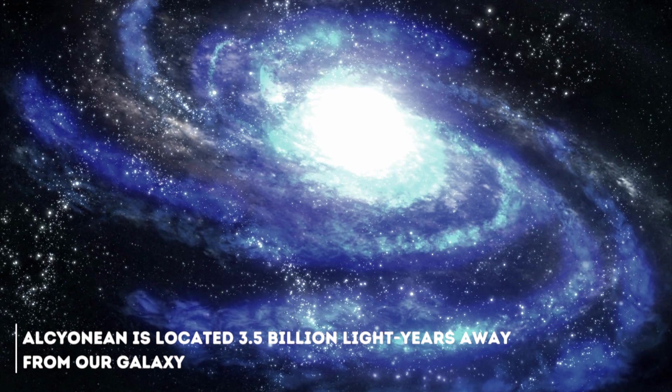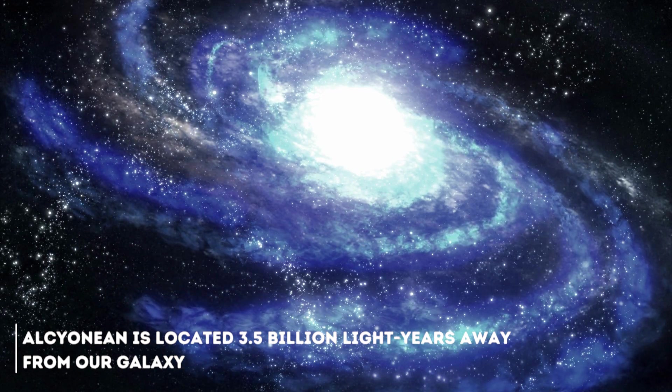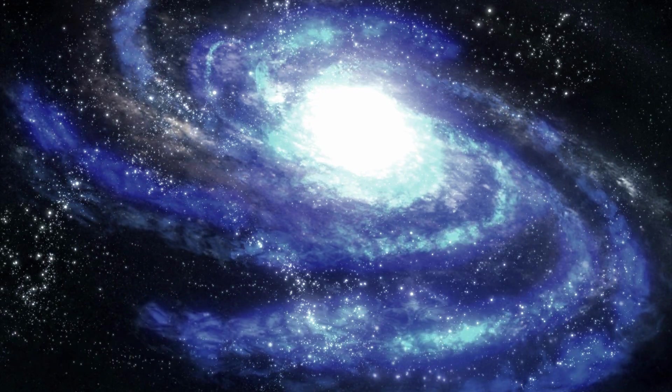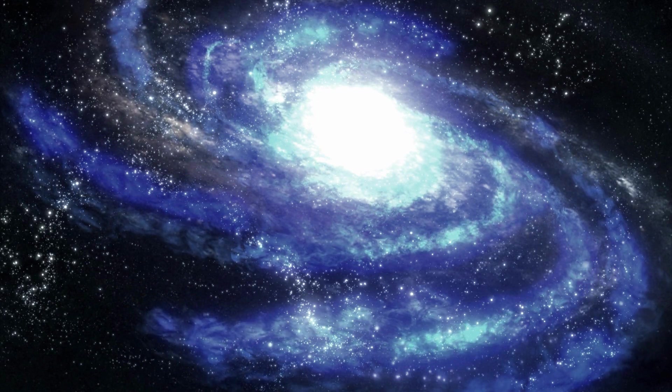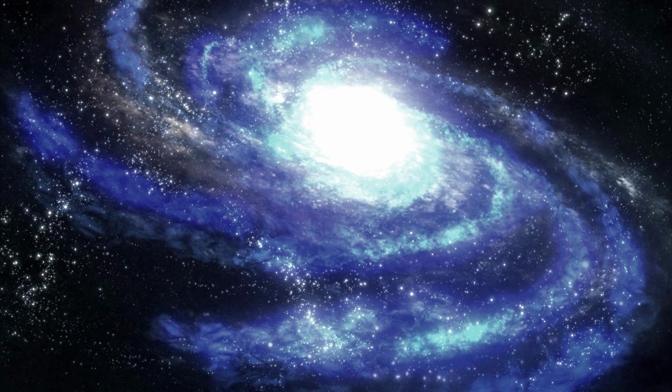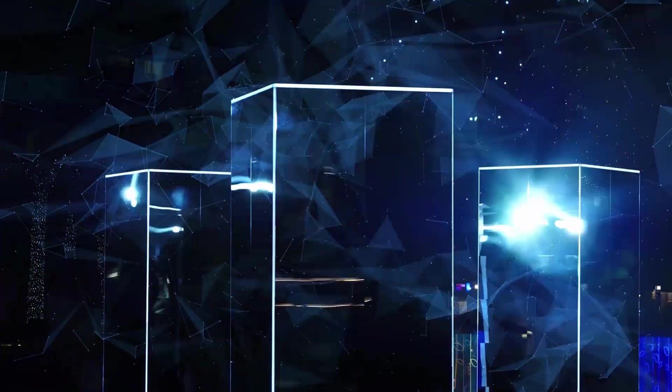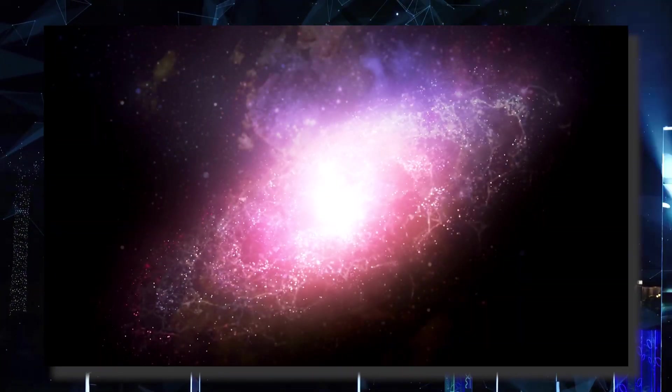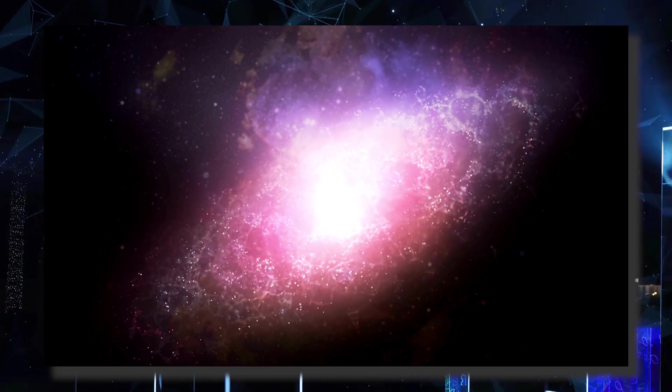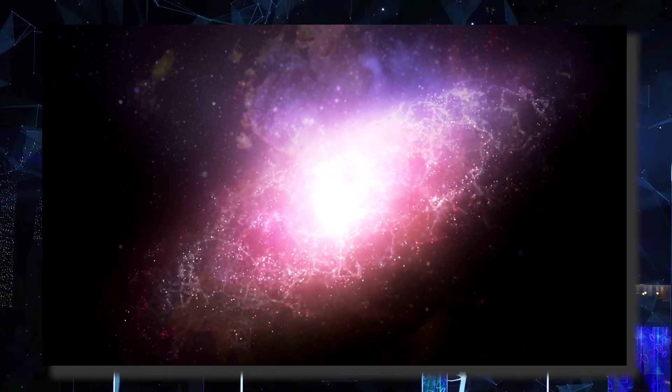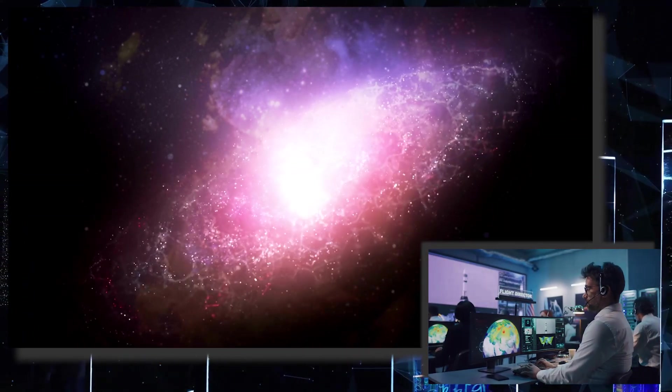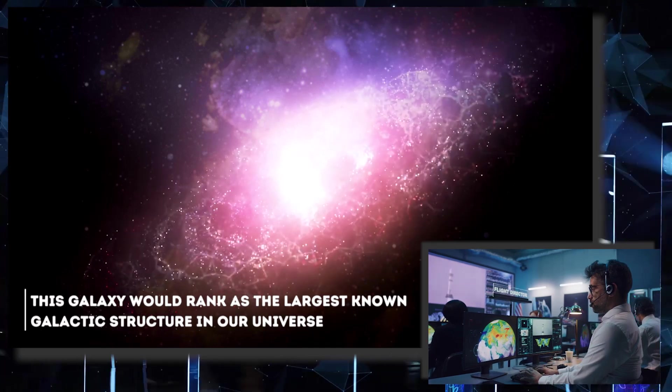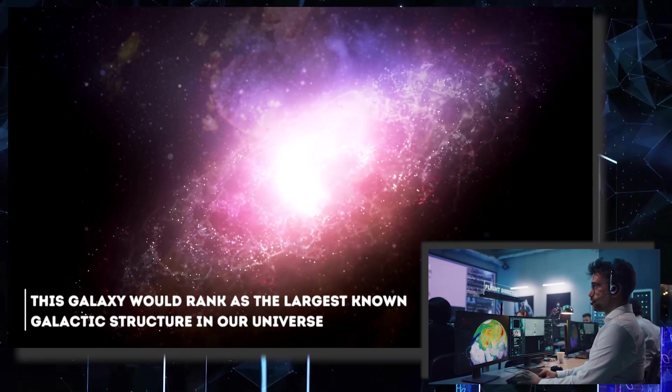Alcinean is located 3.5 billion light years away from our galaxy. According to several scientists, this galaxy is one of the strangest things ever found in our universe. The beginning of its history is complicated in itself. This massive and imposing galaxy was discovered by accident, in what has been catalogued as a great stroke of luck. Estimates indicate that this galaxy would rank as the largest known galactic structure in our universe.